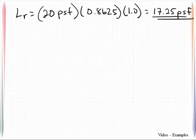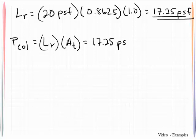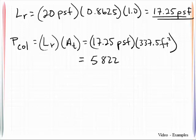Okay, that is that distributed uniform load over the roof. The last thing we need to do is to compute what the load is that is coming down on that column, in particular, column A4. And we will do that by taking that distributed load, L sub R, and multiplying it by the tributary area. So we get 17.25 pounds per square foot multiplied by 337.5 feet squared. This will compute out to be 5,822 pounds, or 5.8 kips.